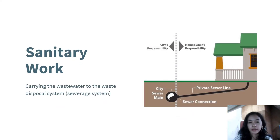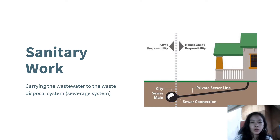Sanitary work, on the other hand, refers to carrying the waste water to the waste disposal system or sewerage system through plumbing fixtures. Sanitary work makes use of plumbing systems to collect and deliver the waste water from our homes to the waste disposal system — also called the sewerage system — so that it can be brought to treatment plants before it is released to the environment.